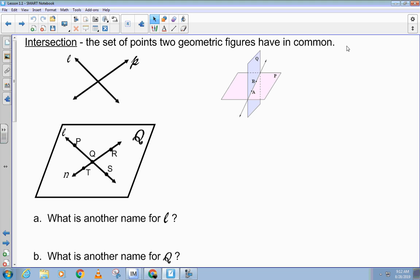Okay, so today we're going to talk about what the intersection is, and then we're going to do a few examples, and then I'll go ahead and get your assignment. Alright, so intersection is the set of points that two geometric figures have in common. So basically it's where they touch each other.